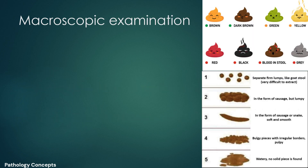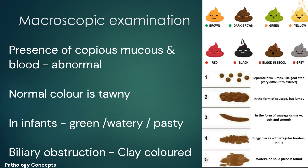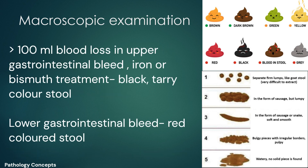Now let's learn about macroscopic examination. The presence of copious mucus and blood is always abnormal. The normal color of stool is tawny due to the presence of bilirubin and bile. In infants, stool may be green and its consistency may be watery or pasty. Clay color or putty color stool is observed in biliary obstruction.